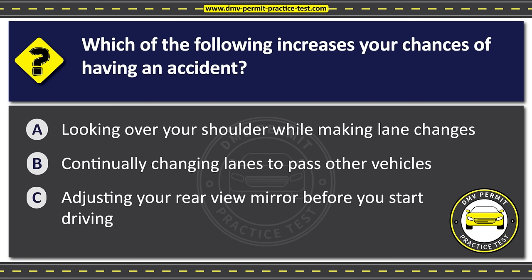Question forty. A solid yellow line next to a broken yellow line means that vehicles. Option A: In both directions may pass. Option B: Next to the broken line may pass. Option C: Next to the solid line may pass. The correct answer is Option B: Next to the broken line may pass.